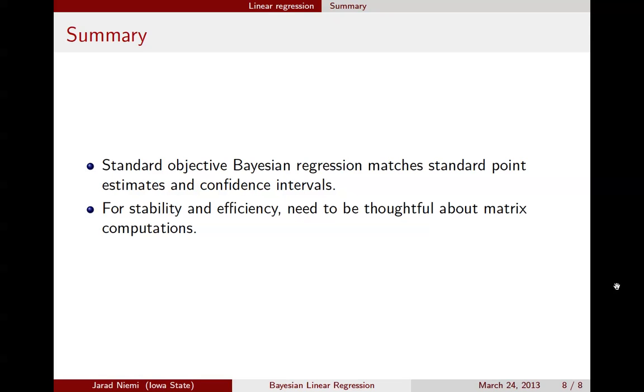In summary, I just wanted to mainly point out here that objective Bayesian regression, the answers can actually be found in closed form in terms of the credible intervals for beta and for posterior for sigma squared. Oftentimes, though, we'll use computational techniques via simulation to actually simulate from the joint posterior distribution. And if we're doing that, we really need to be thoughtful about how we do our matrix computations, and often using decompositions which make these matrix computations more numerically stable and efficient. Thank you.